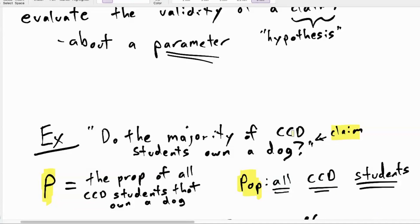What we're going to do is look at the evidence for or against this claim. Just like in a courtroom, you never really know whether somebody is innocent — you just know whether there was enough evidence to say they were guilty or not. We're trying to evaluate this claim.